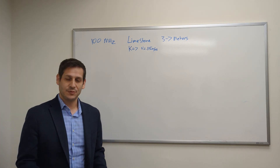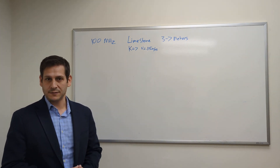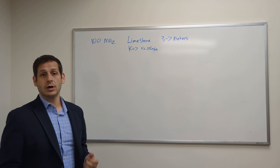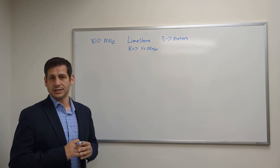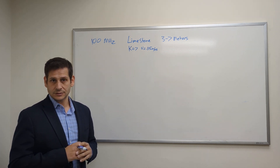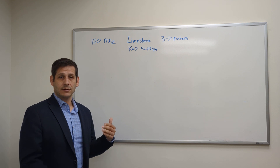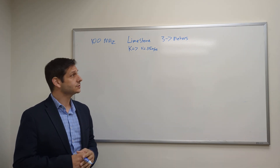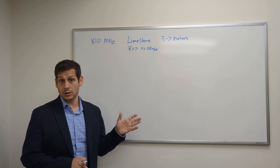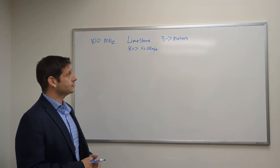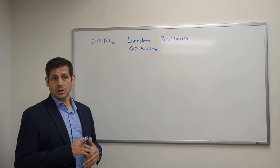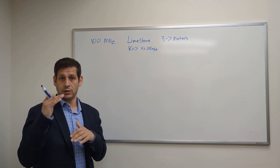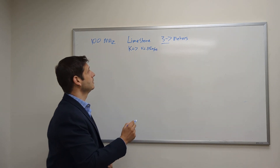Hello everybody, this is Dan Bigman, GPR professor at LearnGPR.com and president of Bigman Geophysical. Today I'm doing a video responding to a YouTube comment. Somebody asked about what specifications they should input into their GPR under certain conditions — specifically a 100 megahertz radar antenna working in limestone, wanting to look three to seven meters below the surface. To figure out what parameters they should use, we need to do a breakdown using math to figure out two things: the time window and the sampling rate.